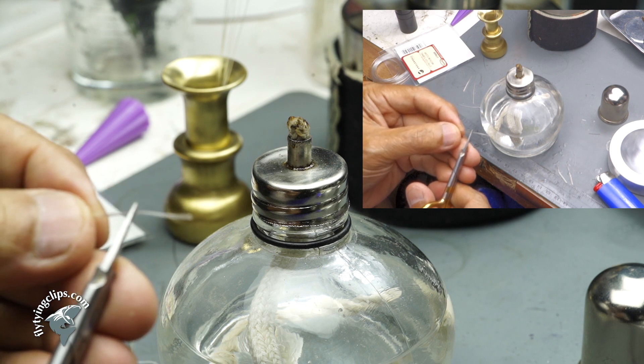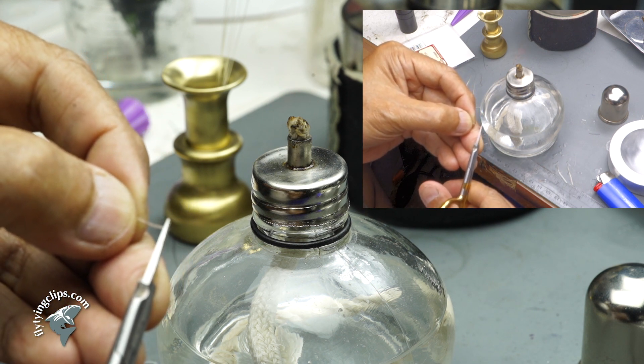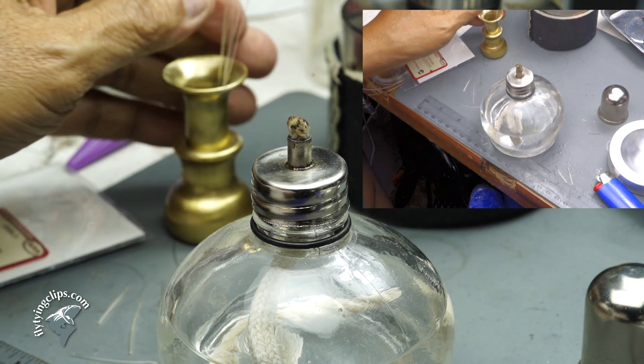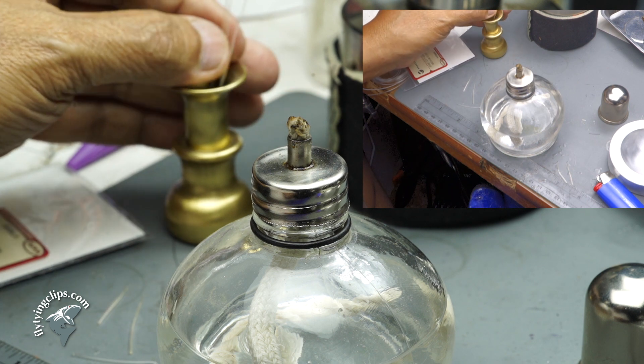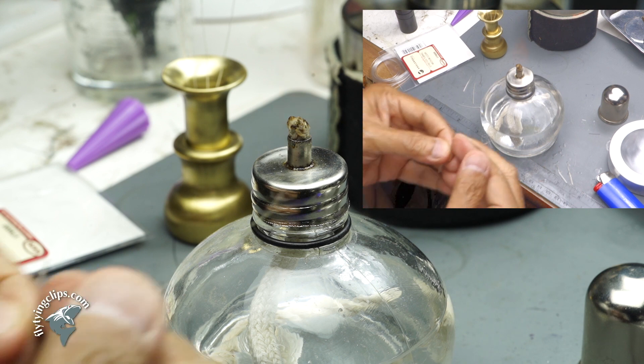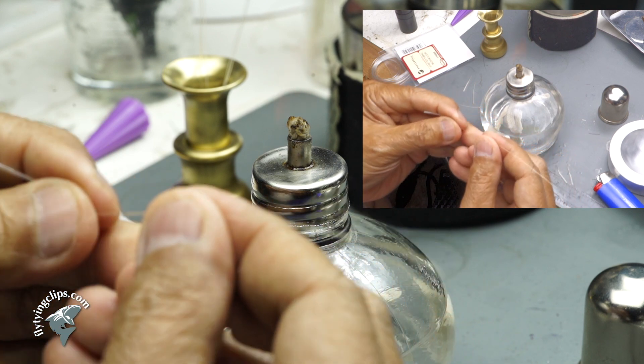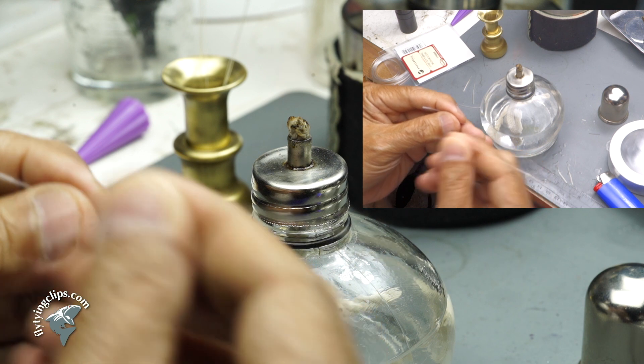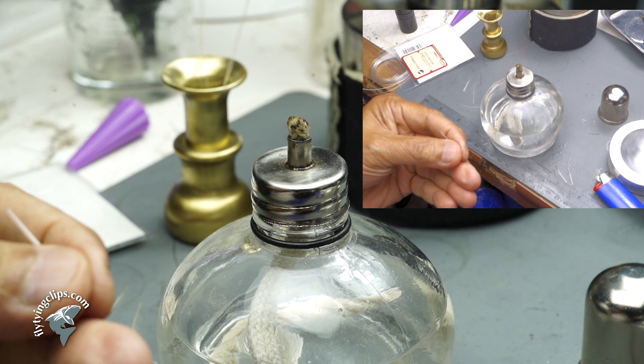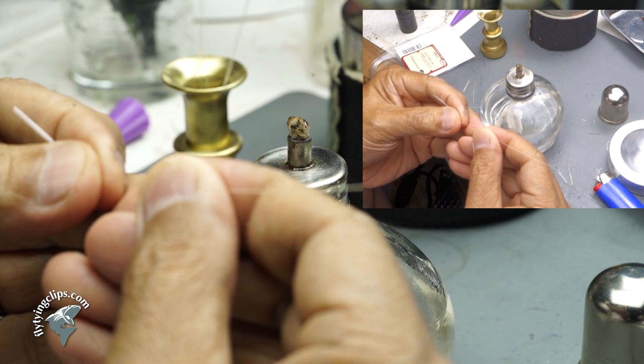Now I like to take a boar bristle. I actually get it off a shaving brush. You can actually buy wild boar bristle from some of the suppliers. I'll trim it off and insert it into that tapered end. You may need to open up that piece and even cut down the length of the hair.